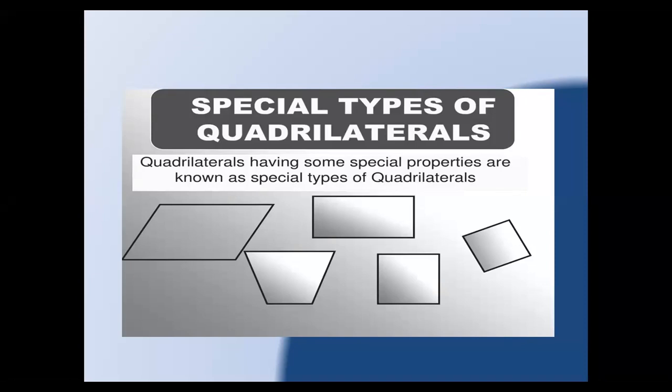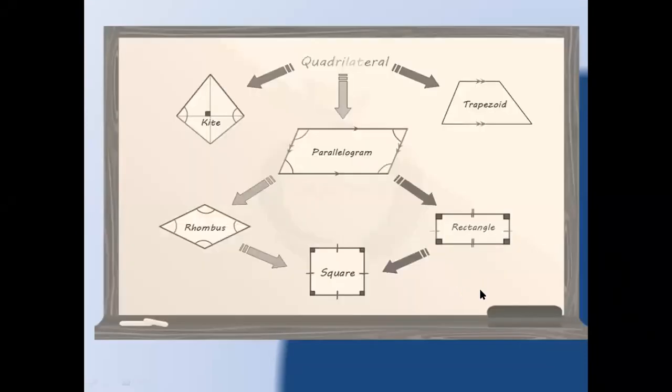Here we have kite, rhombus, square, rectangle, parallelogram, and trapezoid.